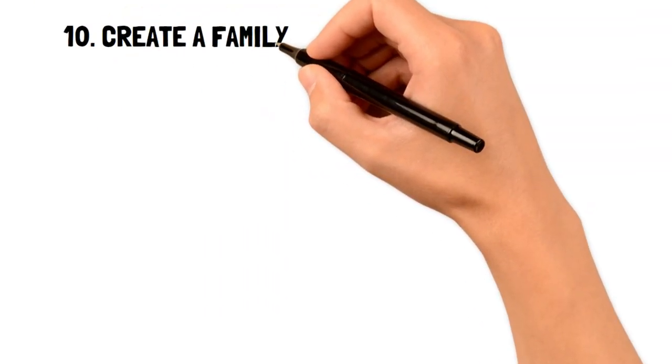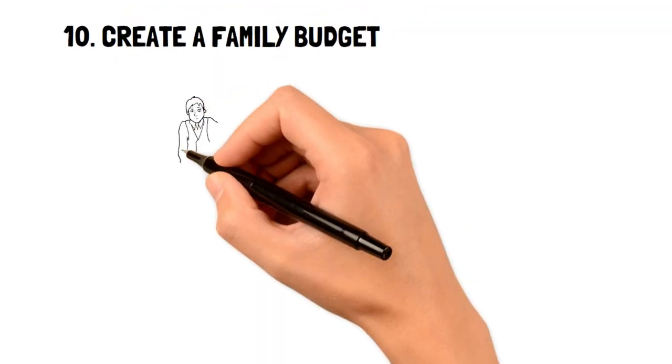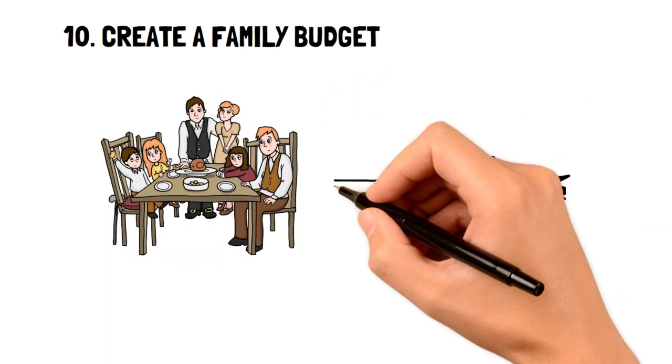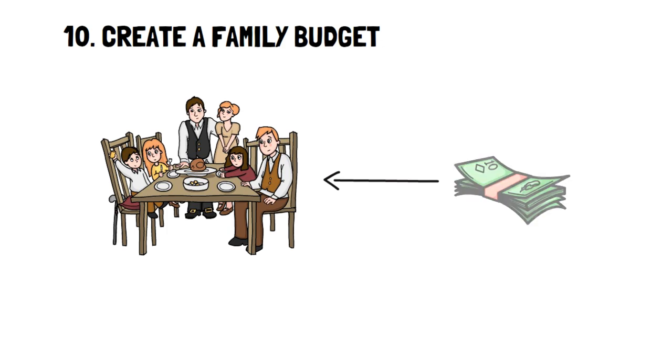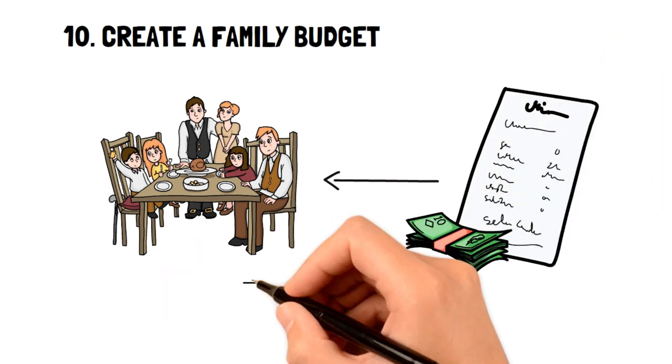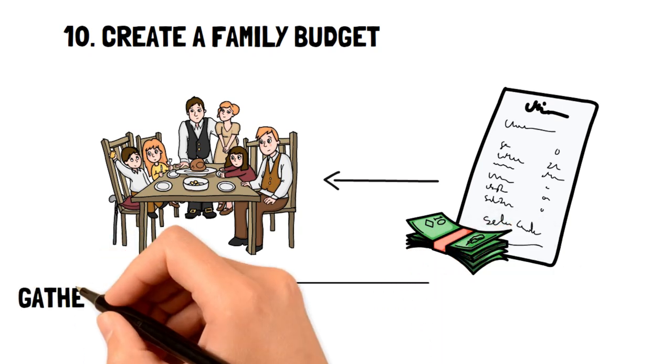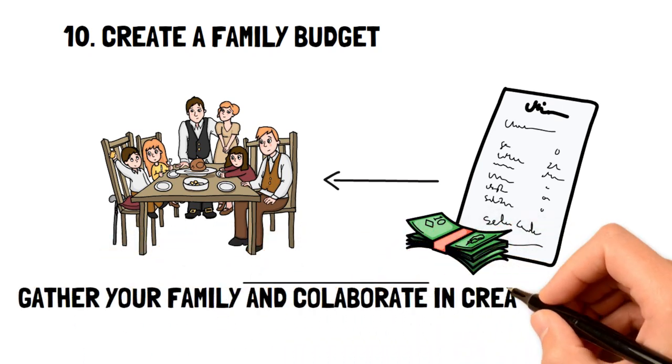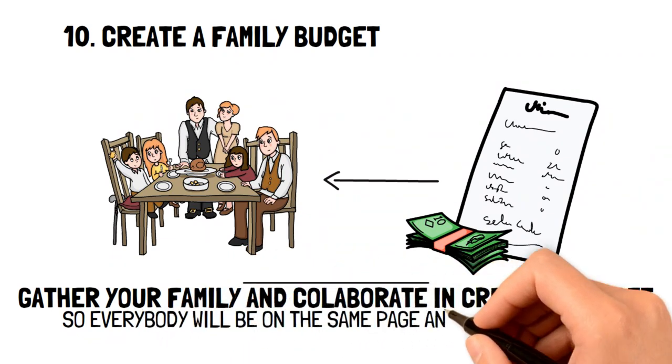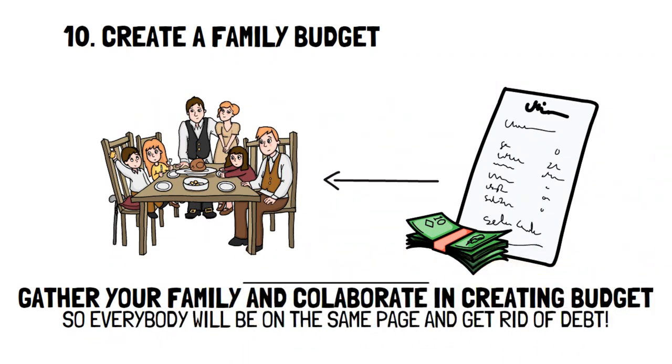10. Create a family budget. Having a family can be extremely expensive, especially for people living on a low income. A great way to ensure that expenses are tracked well is to create a family budget. By having your entire family sit around and collaborate in creating the budget, everyone can be on the same page so you can find a way to get rid of debt the quickest and easiest possible.